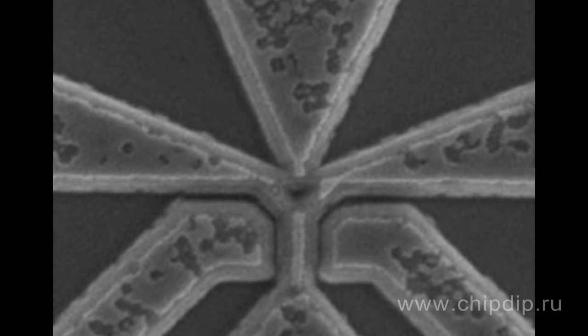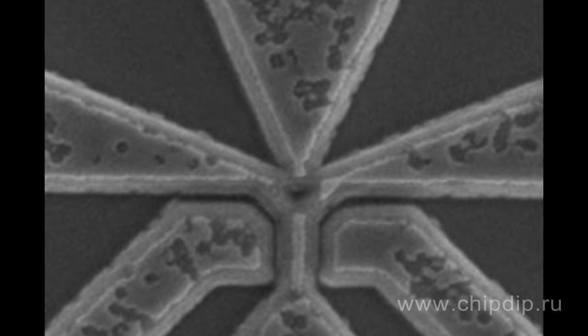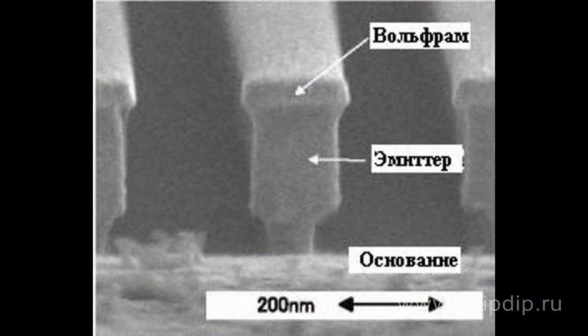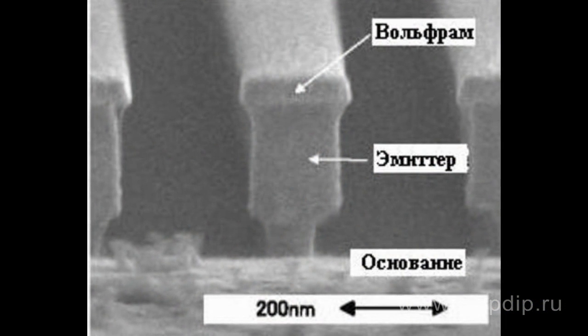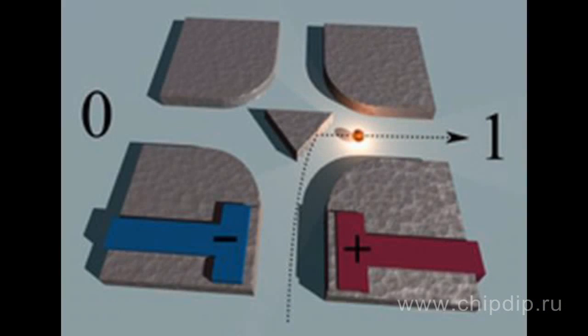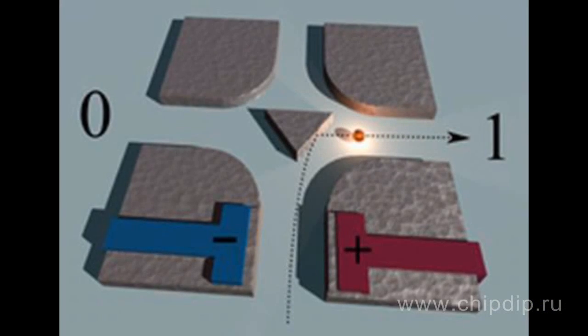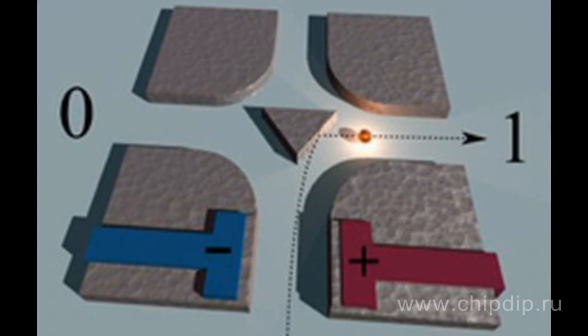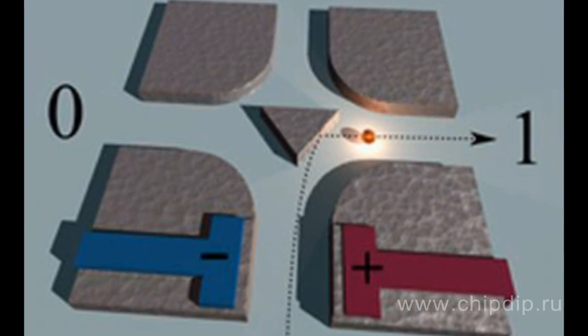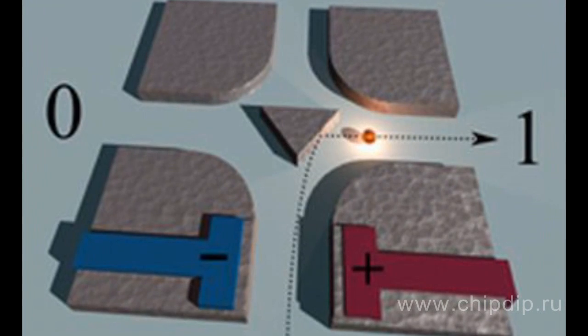This transistor is a kind of crossroads located in the middle of a triangular reflector. It is based on a special semiconductor material in which the impurity atoms do not affect the movement of electrons. Individual electrons passing through a polarized plug are deflected by the electric field and then reflected from one facet of a wedge-shaped obstacle.